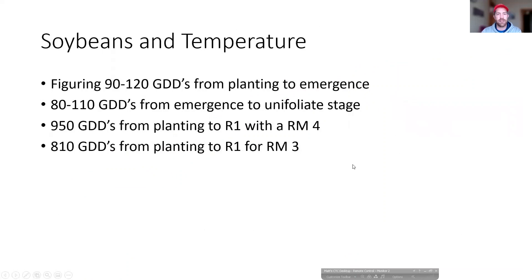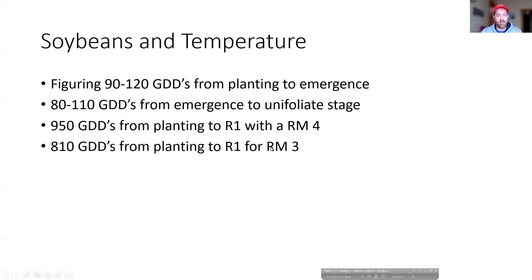The second major aspect or driver of soybean flowering is temperature. It's going to take around 100 growing degree units to get the bean to emerge, and about another hundred to get it to the unifoliate stage where the leaves are out and can sense the day length and night length. After that, it's based off maturity, so it's going to take more growing degree units to get from planting to flowering for a fuller season bean, and less for a short season bean.